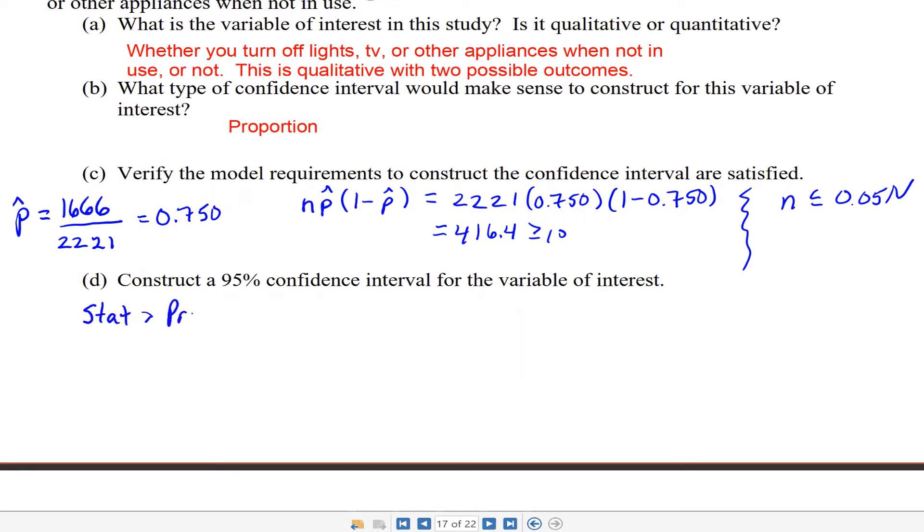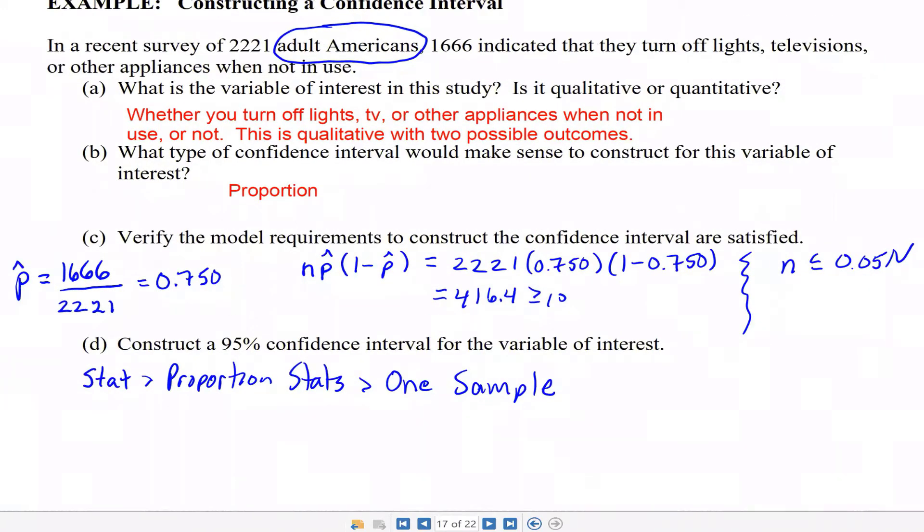We're going to be using StatCrunch to do that. You go stat, proportion stats, one sample. It always asks with data or with summary. This particular problem has summarized data, the 1,666 out of 2,221. If this was raw data, we'd literally have a column of yeses and noes in a StatCrunch spreadsheet.